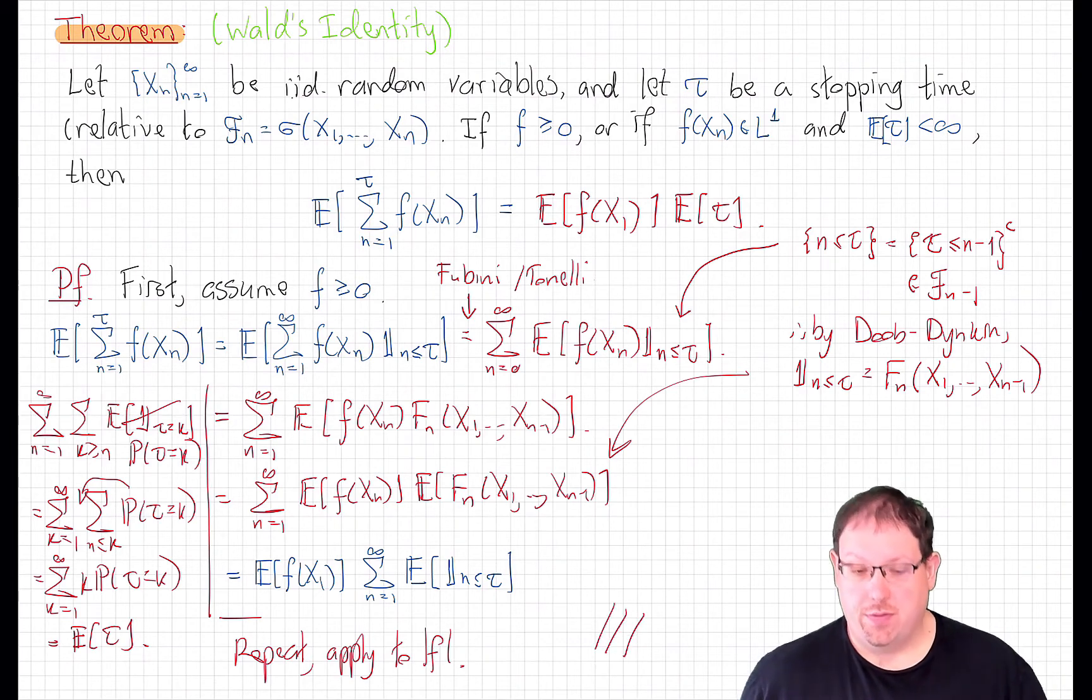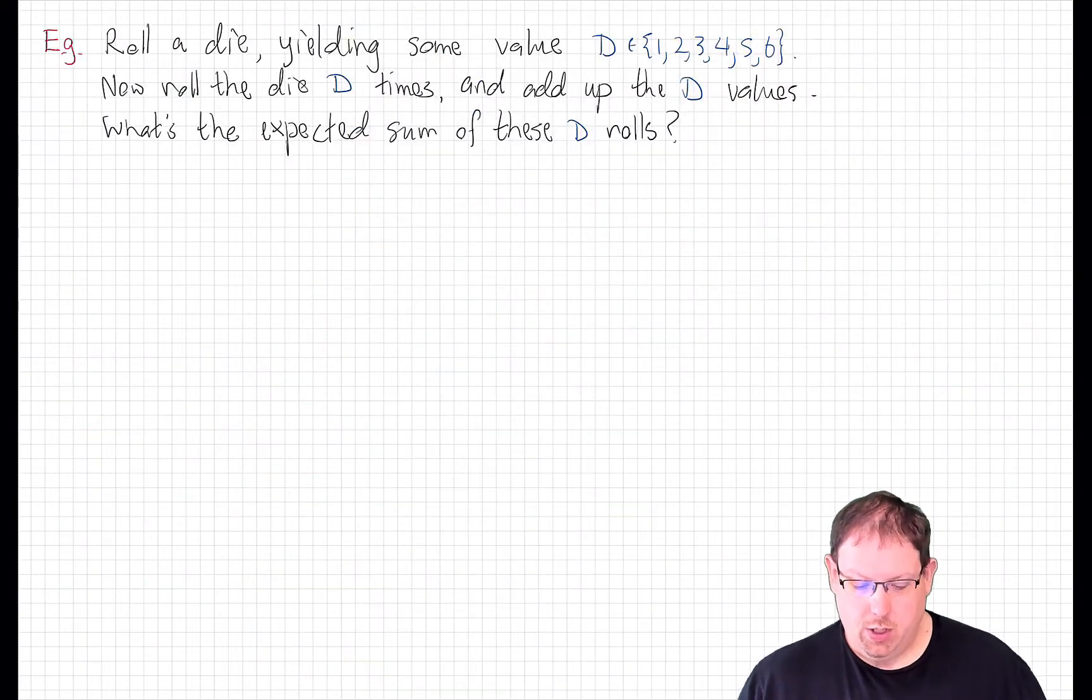Let's look at another fun elementary probability application of this that you can try out at parties, if we ever get to go to in-person parties again. Roll a die. You get some number between 1 and 6. Now whatever number you got, roll the die that many times again. Now add up the values of all of those rolls, not including the first one. What's the expected sum of the d rolls after you determine d by first rolling the die?